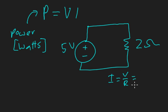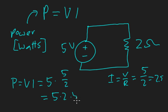Current is voltage over R, equals 5 over 2, or 5 volts over 2 ohms, equals 2.5. So the power contained within this circuit is P = VI = 5 volts times 5/2, equals 5 times 2.5.